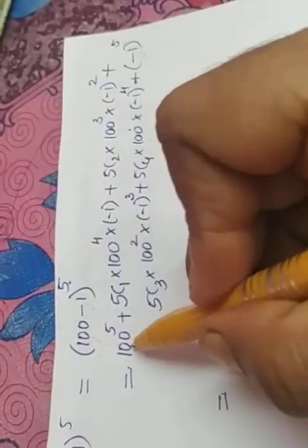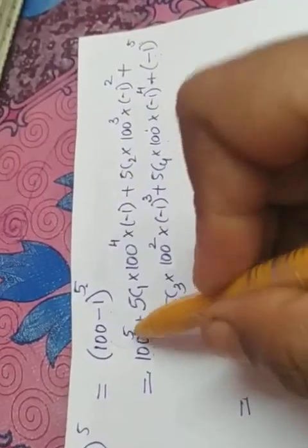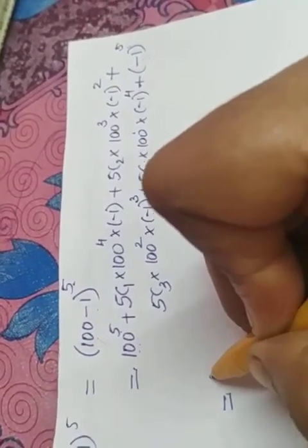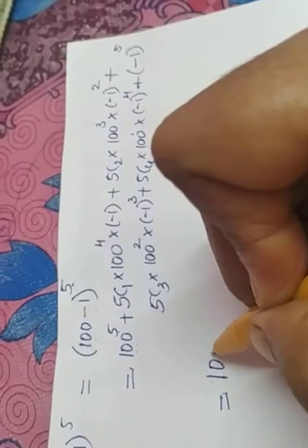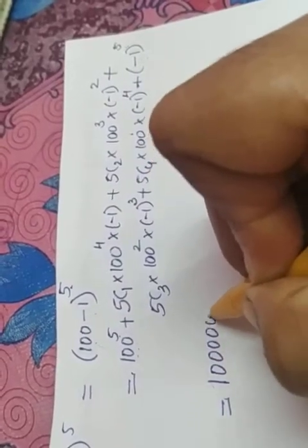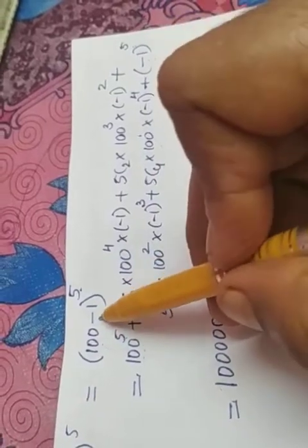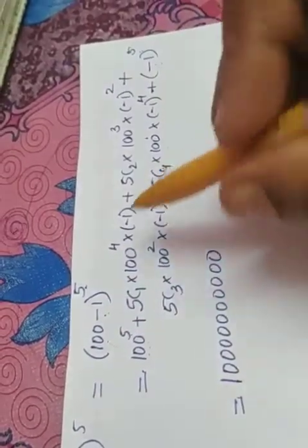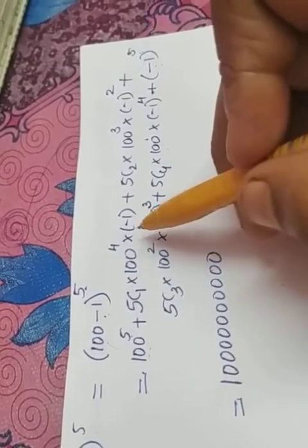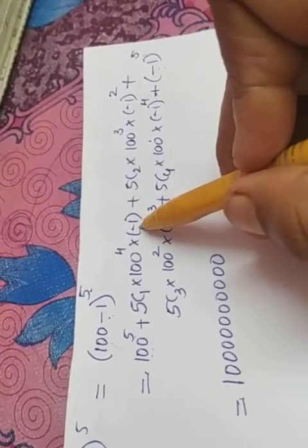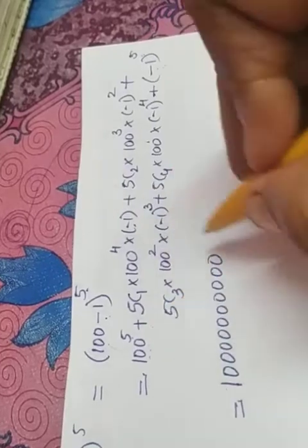That is equal to 100 raised to 5, which contains 10 zeros. Since there is a negative in the middle, it will be alternate positive, negative, positive, negative like that. So minus 5c1 is 5 itself and the term is 100 raised to 4.